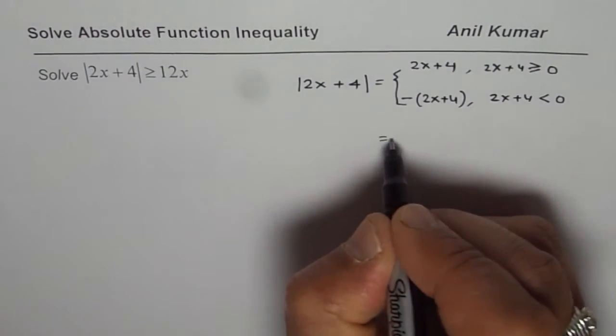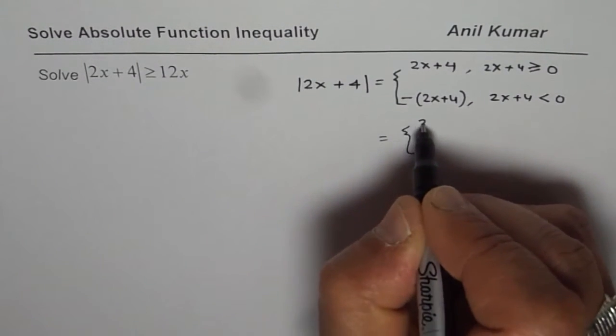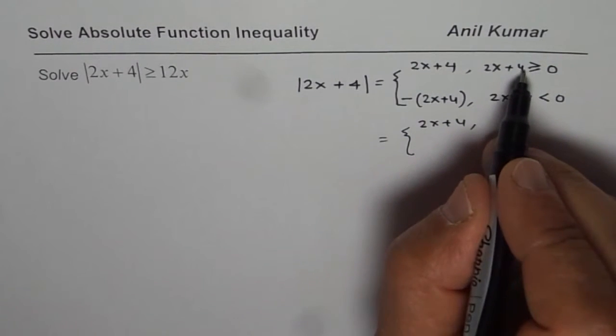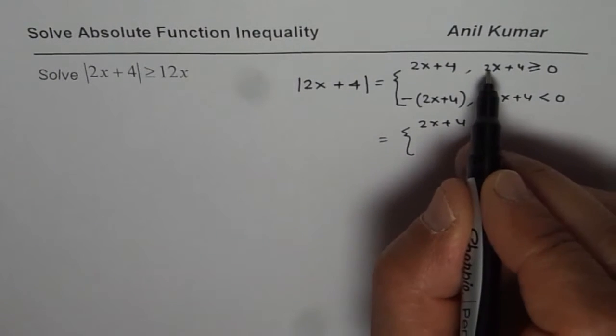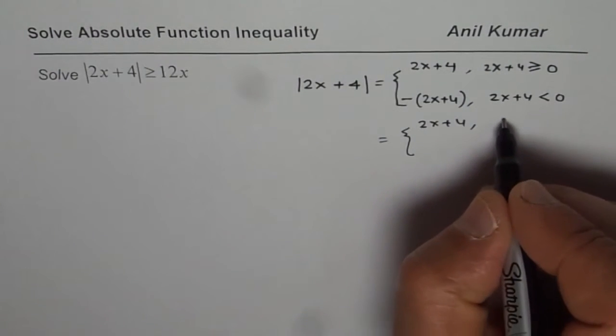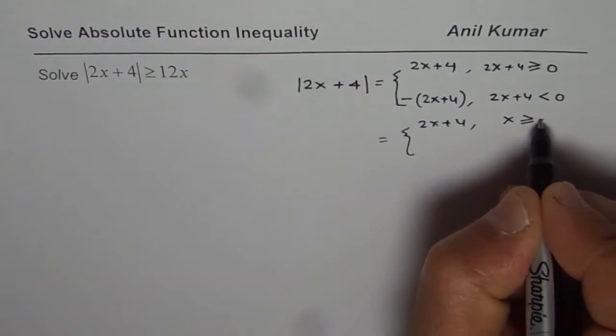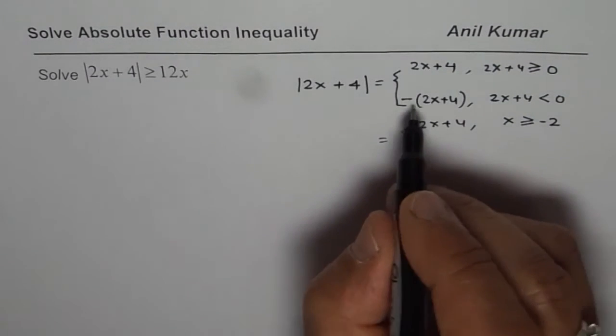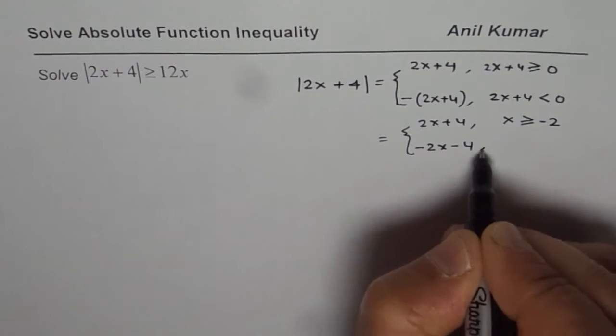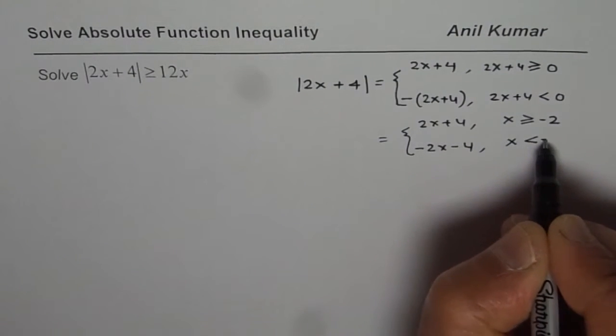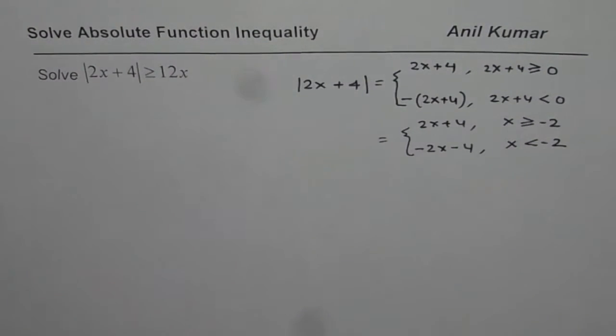Let me rewrite this as 2x + 4 when, let us simplify this, taking 4 to the right side becomes minus 4 divided by 2 is minus 2. So we can write this as x is greater than or equal to minus 2. And let me open this bracket, minus 2x minus 4 when x is less than minus 2. So that is how you can define your absolute function.